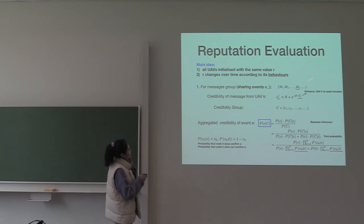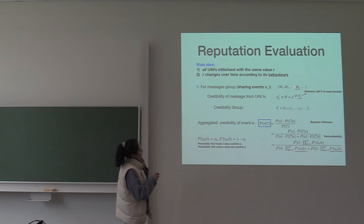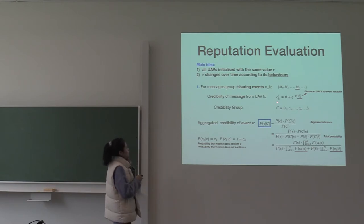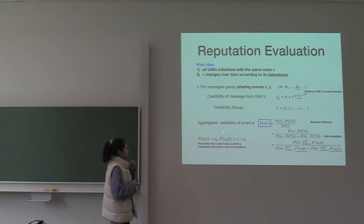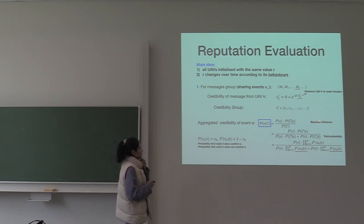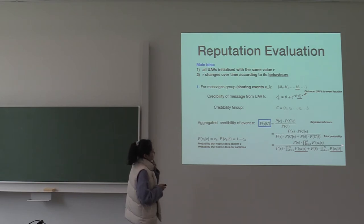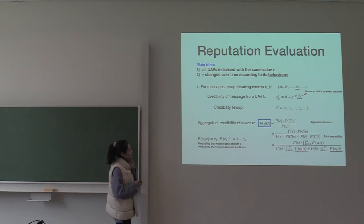This is the calculation of the number of messages in the message group MI. We get the credibility of each message. Then, based on the credibility group, we can infer the aggregated credibility of event E using Bayes' inference. Here's the basic Bayes' rule, and we use the law of total probability to calculate the probability of event E. These two variables: the first one denotes the probability that node K confirms event E, and E-bar represents the complementary event.